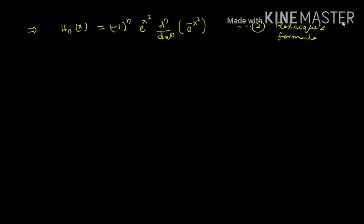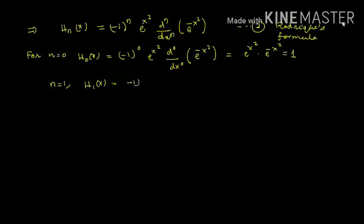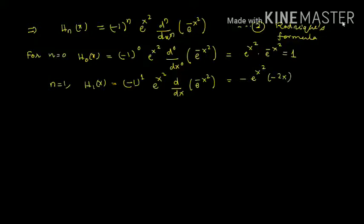Now let us evaluate some Hermite polynomials. For n=0: H0(x) = (-1)^0 · e^(x²) · e^(-x²) = 1, so H0(x) = 1. For n=1: H1(x) = (-1)^1 · e^(x²) · d/dx(e^(-x²)) = -e^(x²) · (-2x)·e^(-x²) = 2x.